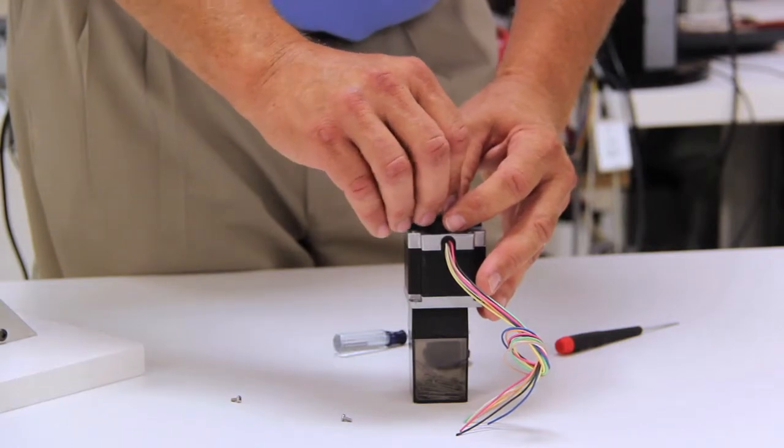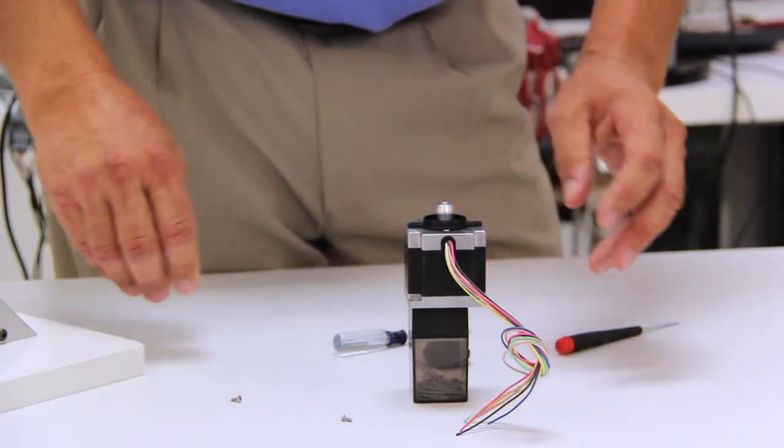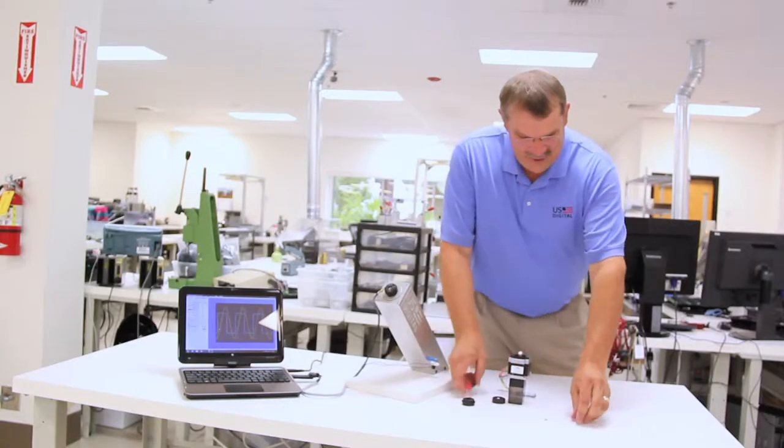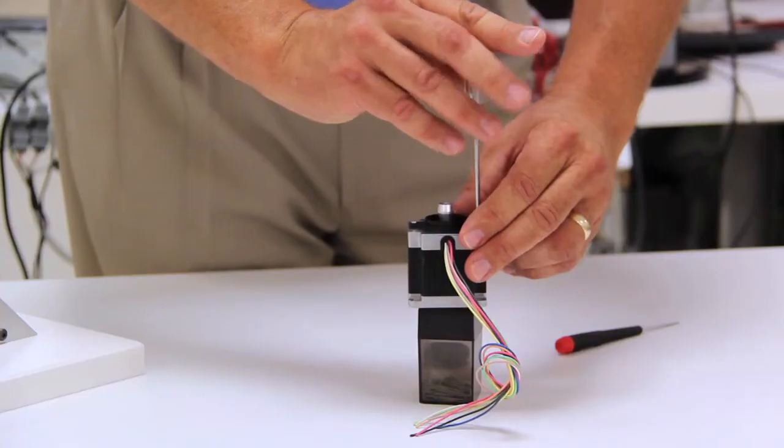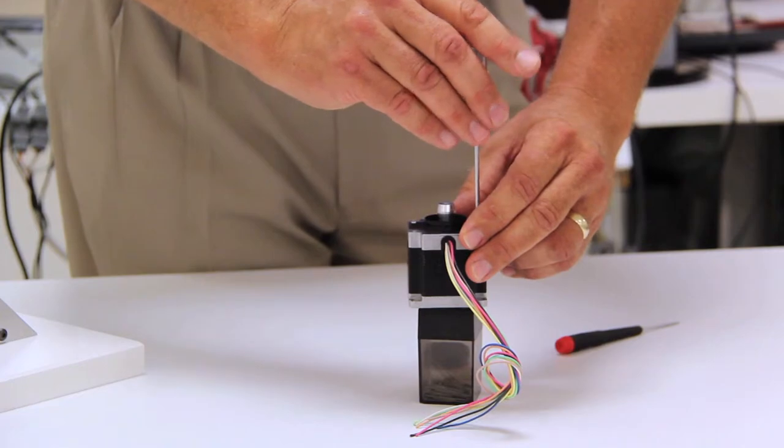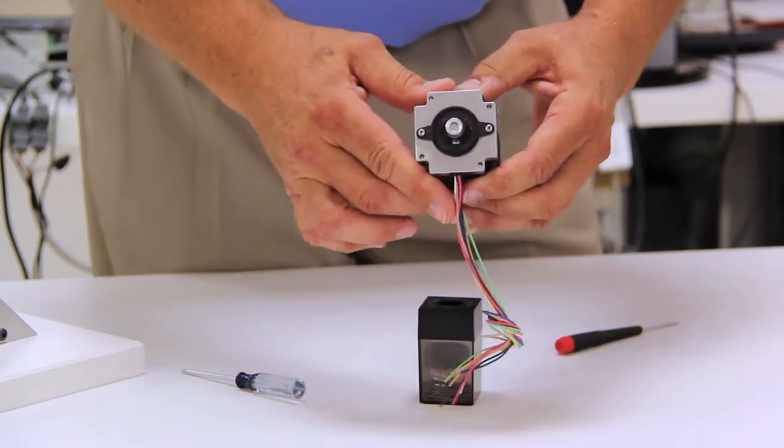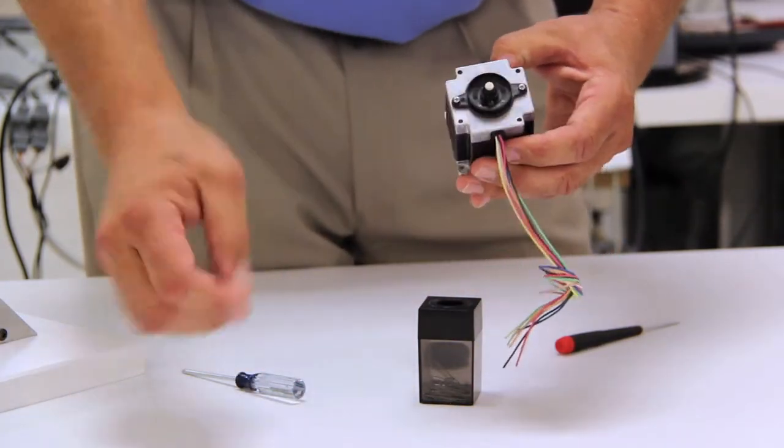To do that, we use the centering tool which is shipped with the product. It simply slides over the shaft of the motor, and then you essentially lock or attach the base plate to the back of the motor using machine screws. Base plate's attached. Remove the centering tool.